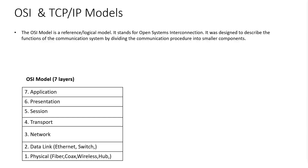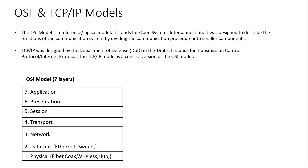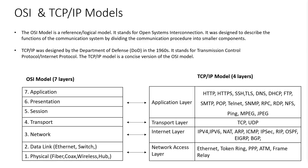The TCP/IP model is a concise and concrete implementation on network systems. The TCP/IP model was designed by the Department of Defense in 1960. It stands for Transport Control Protocol Internet Protocol. As you can see in this table, the TCP/IP model is a four-layer model. We have application layer, transport layer, internet layer, and network access layer.